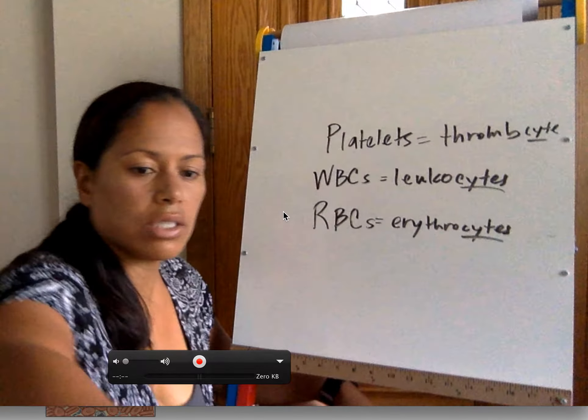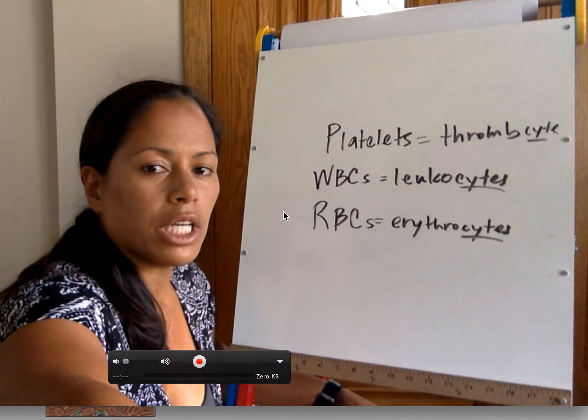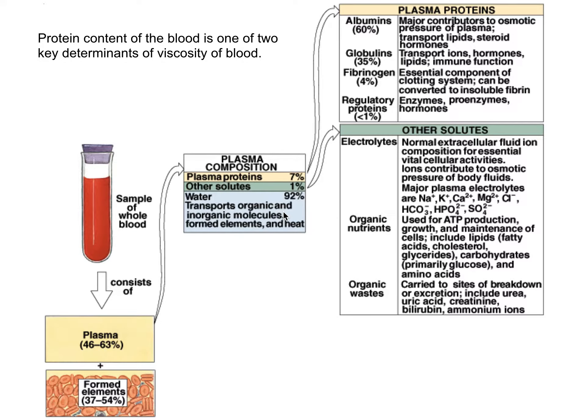These are your three formed elements of the blood and they make up about 50%. So a really easy way to remember it is 50-50: plasma, which is your fluid with plasma proteins and other solutes, is about 50%, and your formed elements — PWR — is about 50% as well.